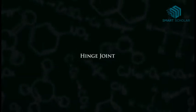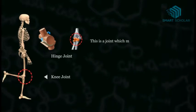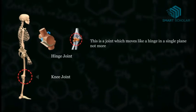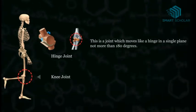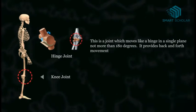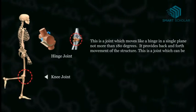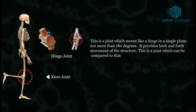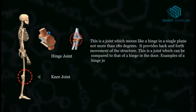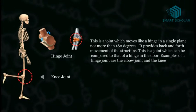Hinge joint. This is a joint which moves like a hinge in a single plane, not more than 180 degrees. It provides back and forth movement of the structure, and can be compared to a hinge in a door. Examples of a hinge joint are the elbow joint and the knee joint.